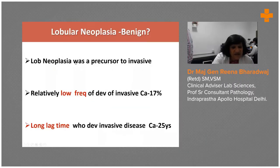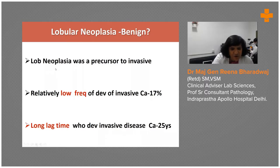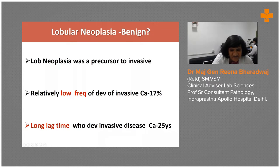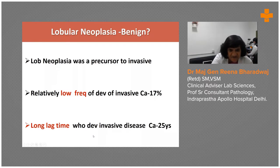In the study of Higginson et al., he wondered whether it was a precursor to invasive carcinoma. His meticulous follow-up of cases confirmed that yes, it is a precursor to lobular carcinoma. Although it takes 25 years to develop into invasive carcinoma, about 17% of cases do develop into one. So though the frequency is low and the lag time is long, it is a precursor to invasive carcinoma.